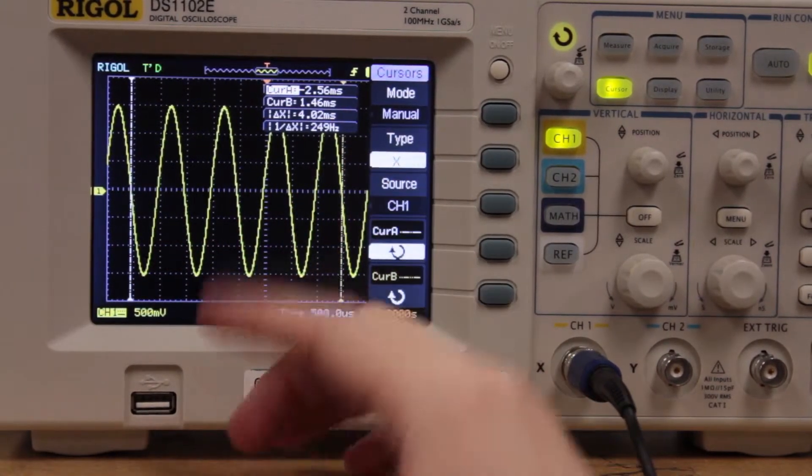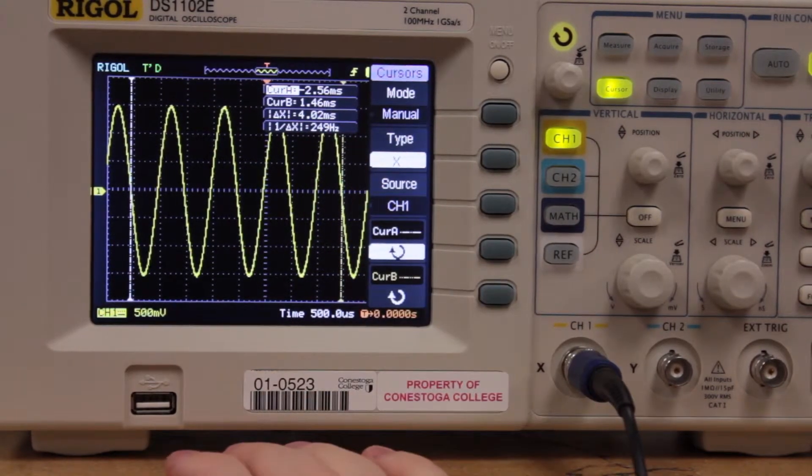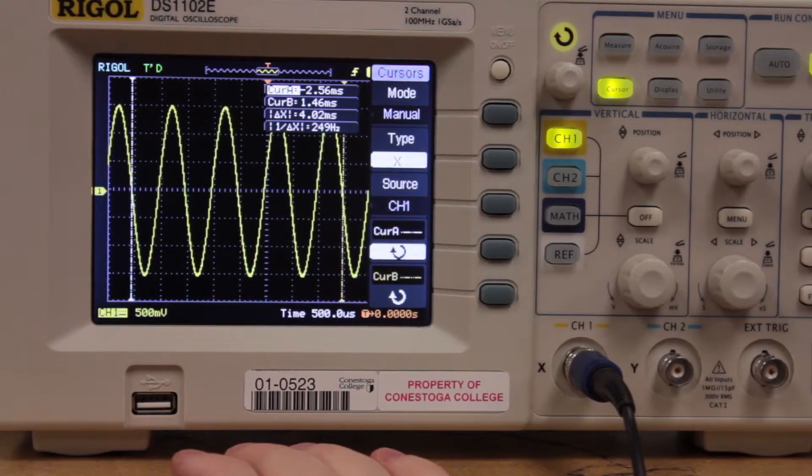So we're looking at about 4.02 milliseconds and we divide that out we get an average of 1 millisecond per cycle.